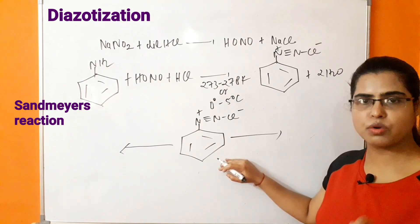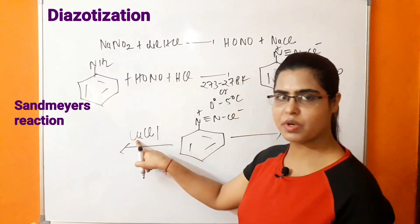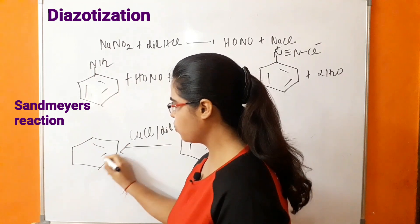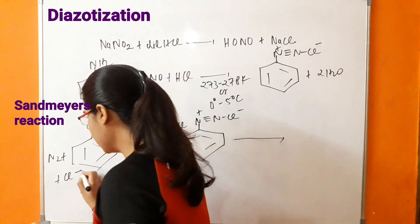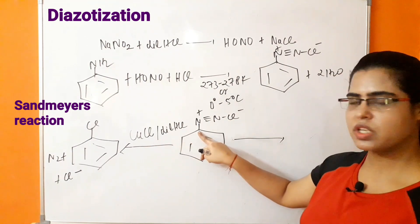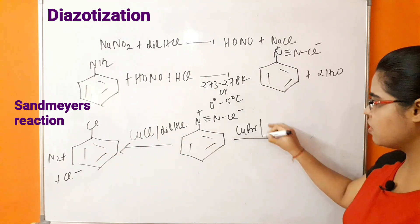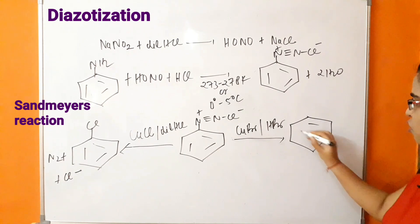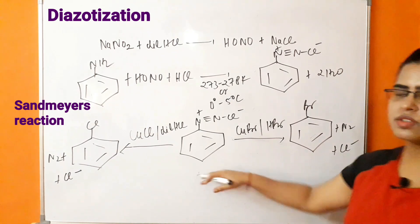In Sandmeyer's reaction, both chlorobenzene and bromobenzene can be prepared. To form chlorobenzene, cuprous chloride is dissolved in HCl, resulting in the formation of chlorobenzene with removal of N2 and Cl⁻. The chlorine from cuprous chloride is introduced into the benzene ring. Similarly, bromobenzene is formed with removal of N2 and Cl⁻. This reaction is known as Sandmeyer's reaction.